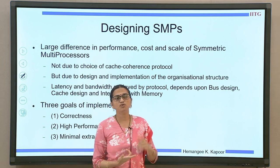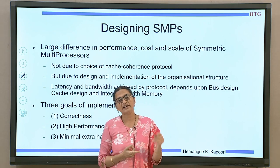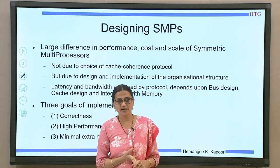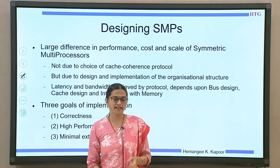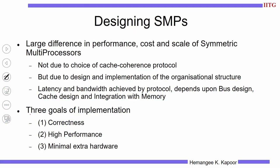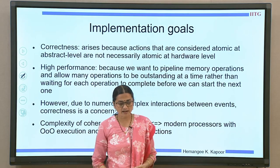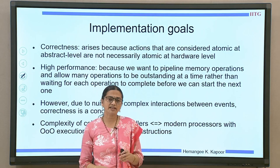When we are implementing, we need to keep track of three main goals of any implementation. One is it should be correct, it should be high performing, and at minimal extra hardware. So your overhead should be as less as possible. All these systems are going to implement the same cache coherence protocol with some variations, but how we design and integrate these components will affect the final performance, cost, and scalability of your SMP. The implementation goals are correctness, high performance, and using minimal extra hardware.